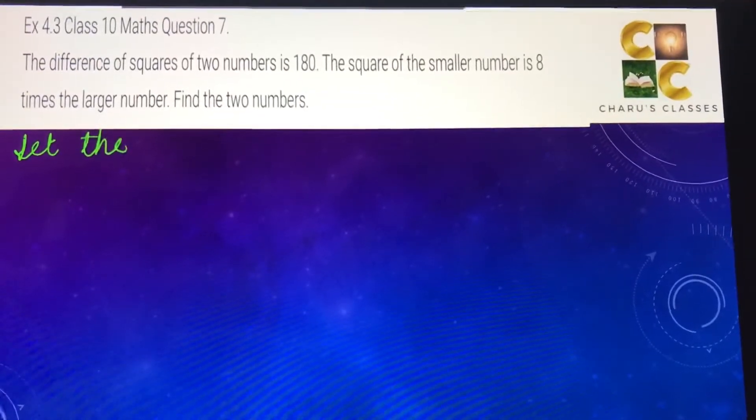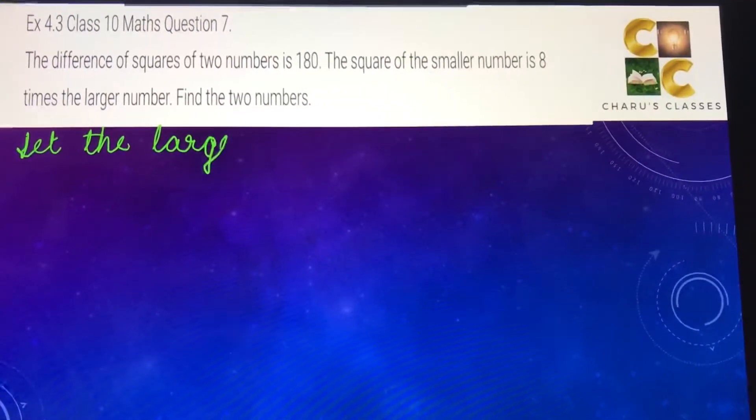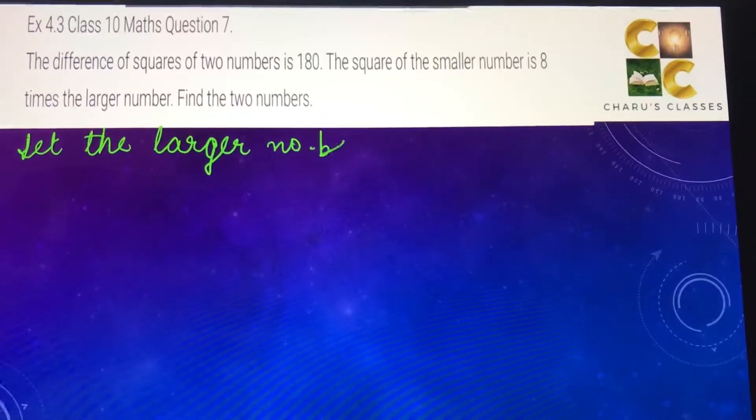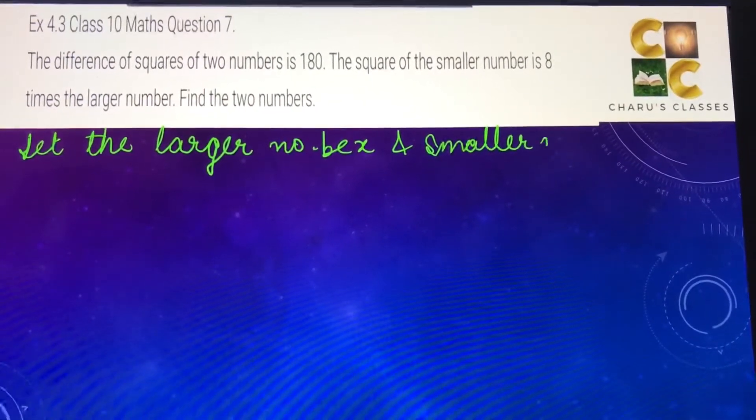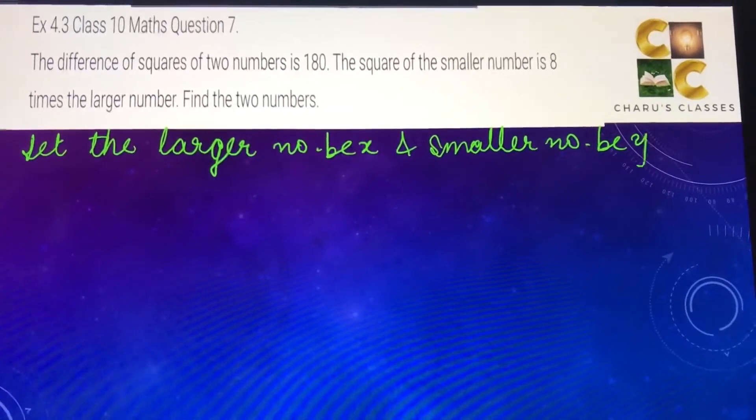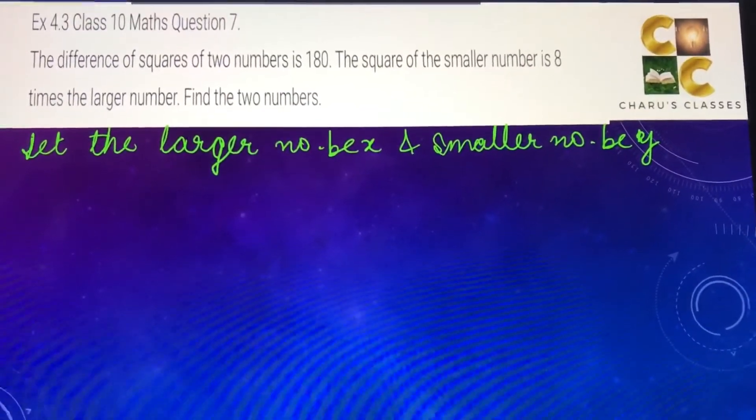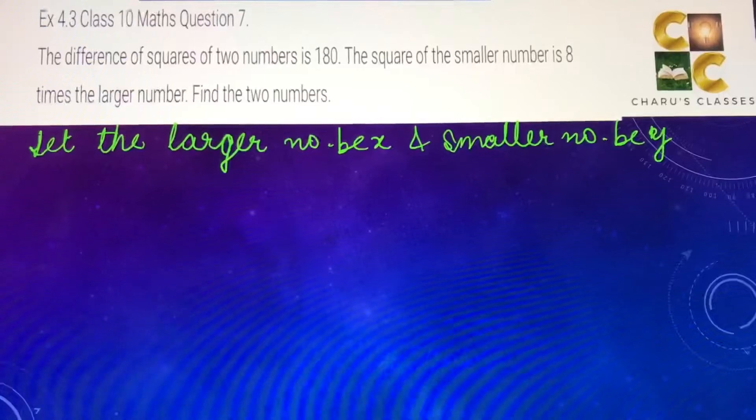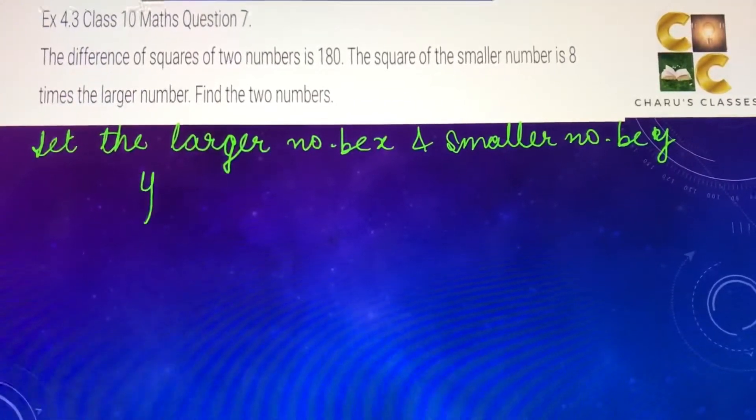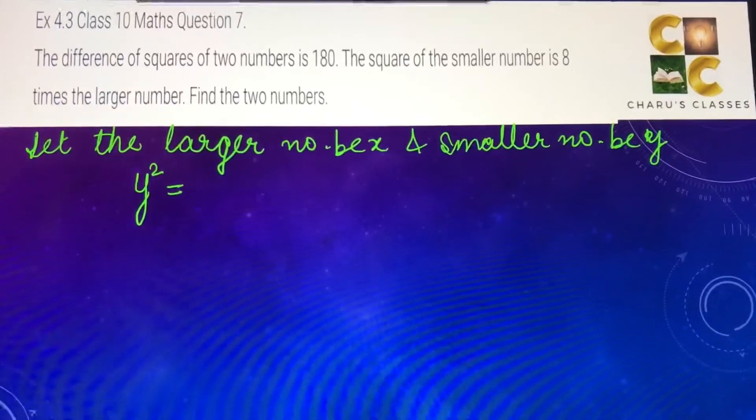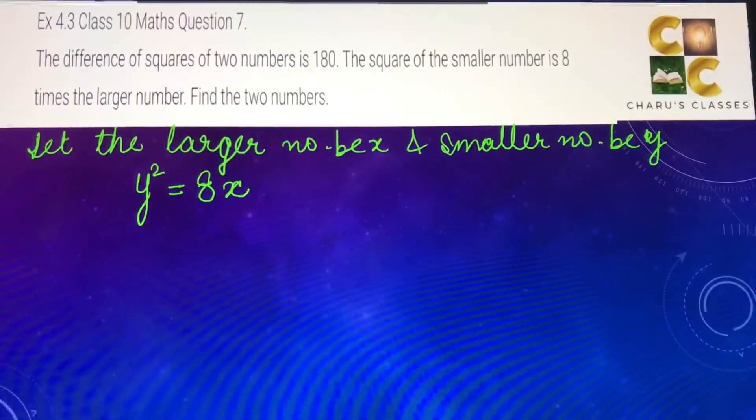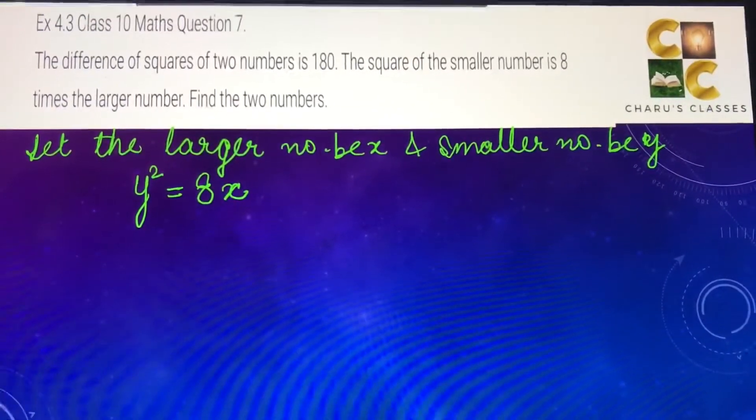Let the larger number be x and smaller number be y. Now, the square of the smaller number, which is y squared, is 8 times the larger number. It means 8 multiplied by the bigger number, which is x.